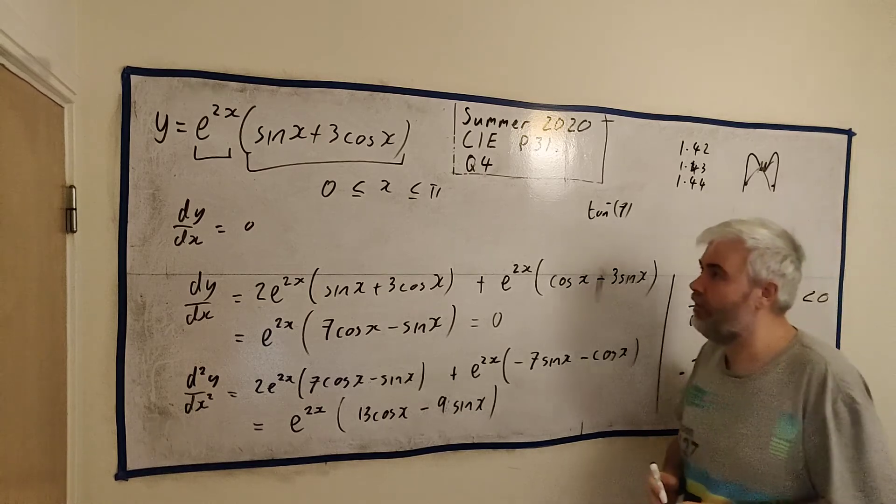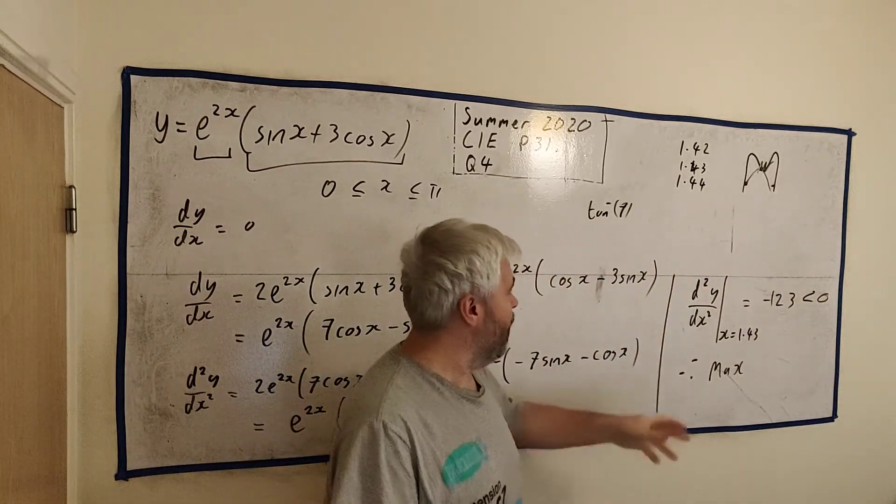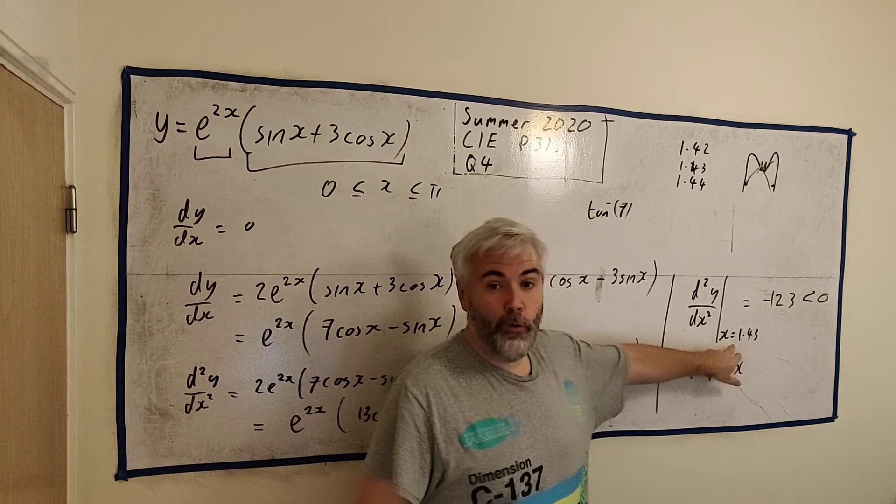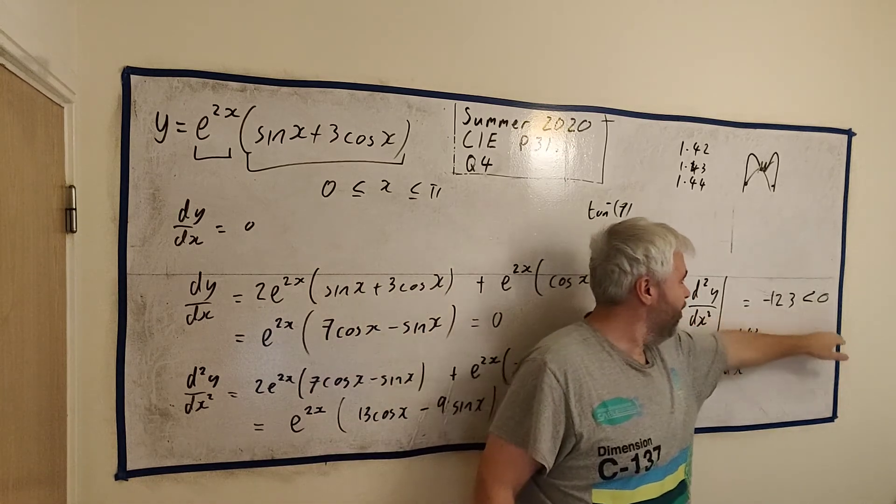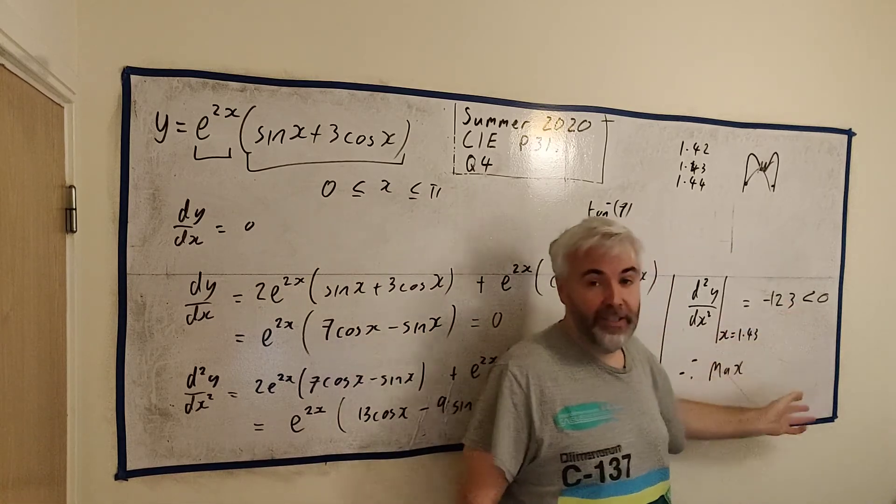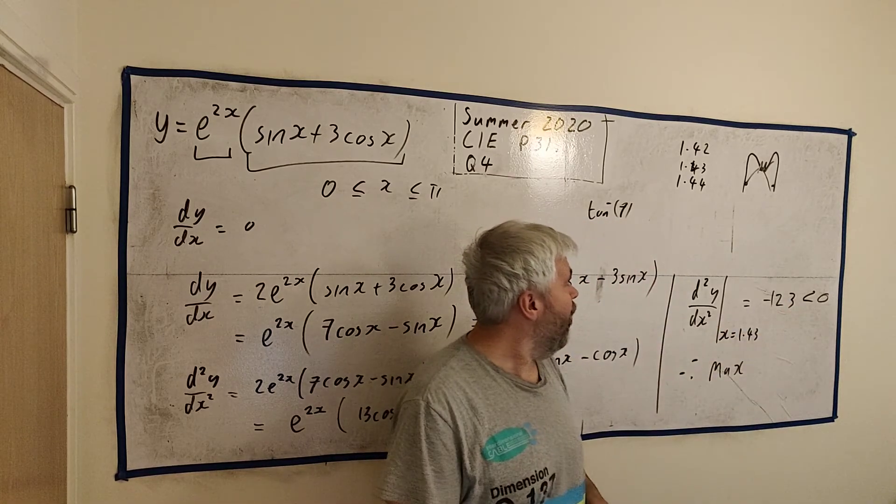We'll just write therefore max. That'll be full marks as well. So if you get the second derivative and put in the x value you know, if the number is less than zero, it's a maximum. If the number is bigger than zero, it's a minimum.